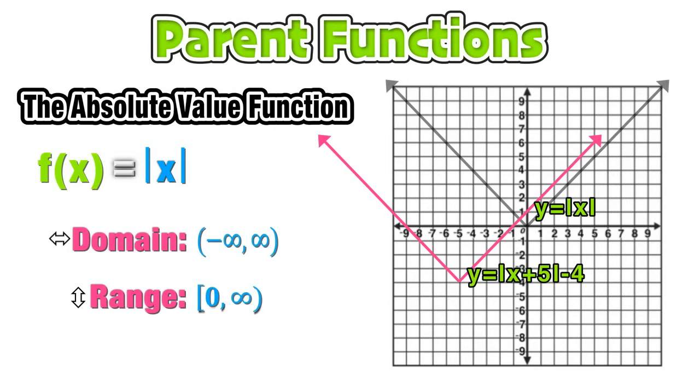For this particular shift, we can see how the domain remained the same, but the range has to be adjusted. Now instead of 0 to infinity, we have negative 4 to infinity.